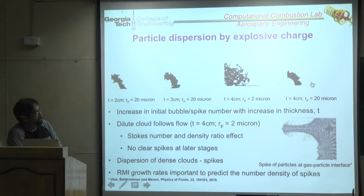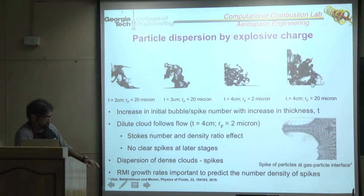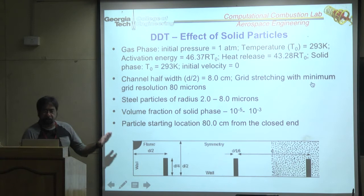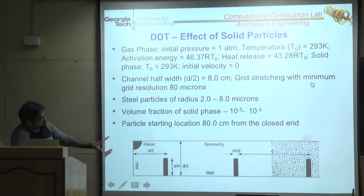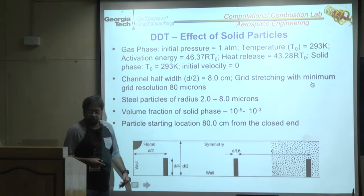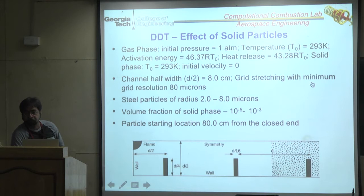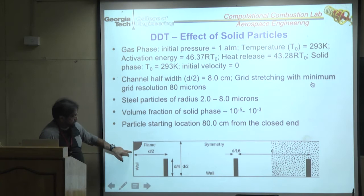Deflagration-to-detonation transition (DDT) is also a two-phase problem. Deflagration has a typical subsonic flame speed of ~0.3 m/s. In a long confined pipe with baffles, a premixed flame slowly accelerates, going from ~3 cm/s to ~3 km/s within less than a meter, transitioning from deflagration to detonation.